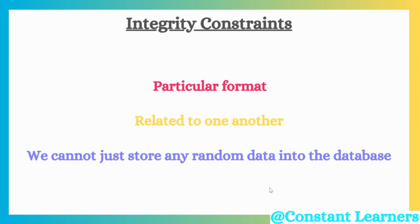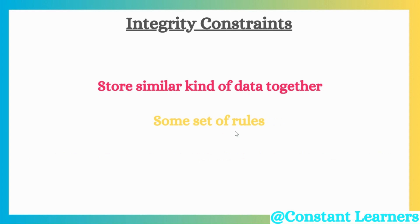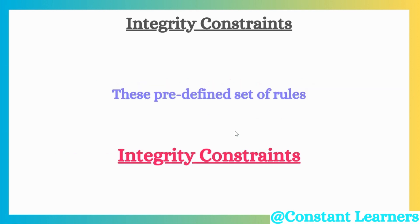Integrity constraints. We know that data is supposed to be stored inside the database, but we cannot just dump data anywhere in the database. We need to store the data in a particular format, and this data is supposed to be related to one another. We cannot just store any random data into the database. So to store similar kinds of data together, we need to follow some set of rules, and these predefined rules are known as integrity constraints.